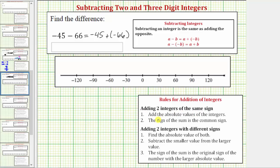Step one: we add the absolute values of the integers. So let's first find the absolute value of both integers — the absolute value of negative 45 and the absolute value of negative 66. The absolute value of a number is its distance from zero, and distance is always positive. The absolute value of negative 45 is positive 45, and the absolute value of negative 66 is positive 66.